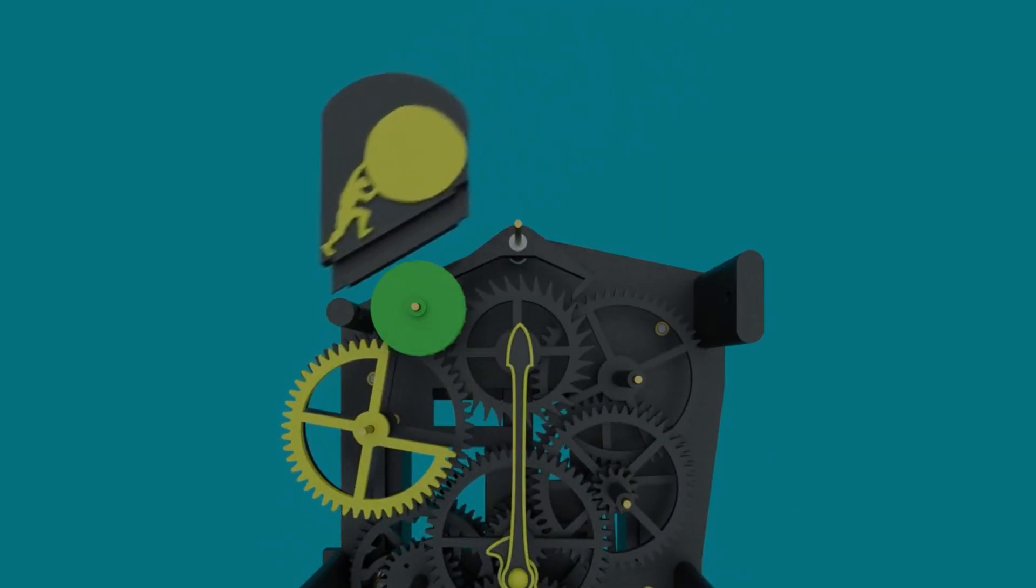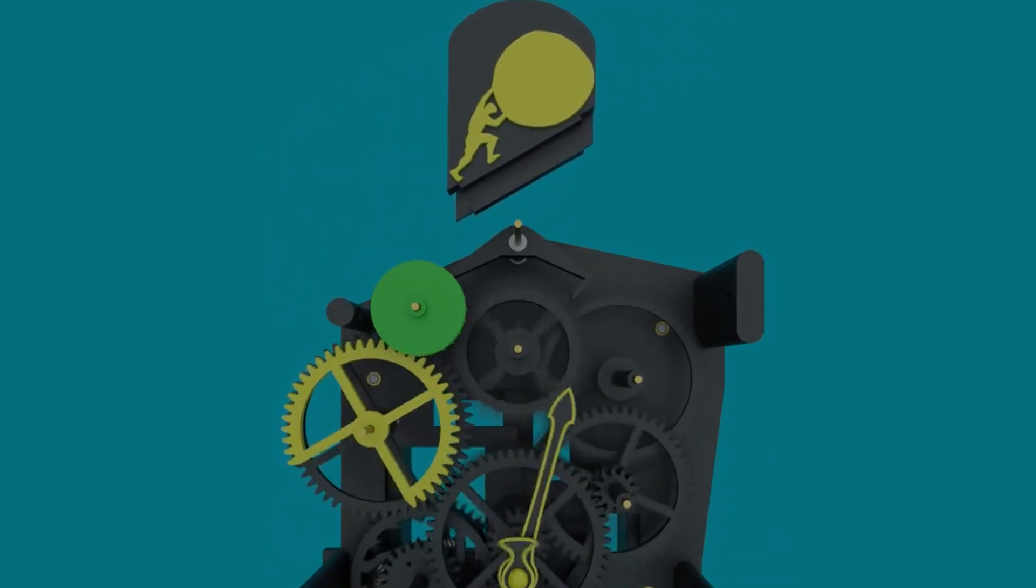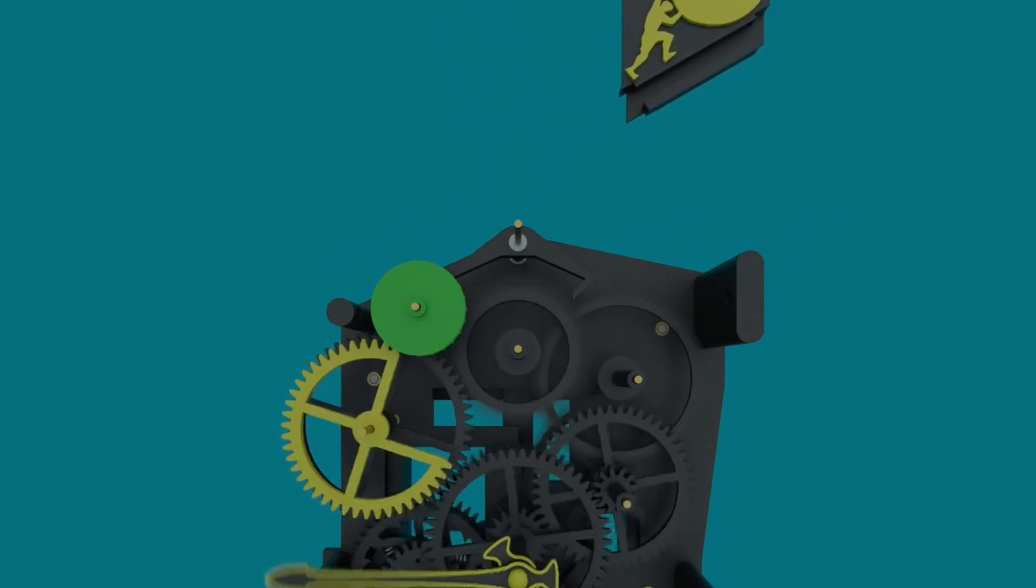When it gets to the portion of the yellow gear where there are no teeth, the weight of Sisyphus and gravity pull them back down to the bottom, unwinding the green hub. Then, the process begins again at 8 o'clock.